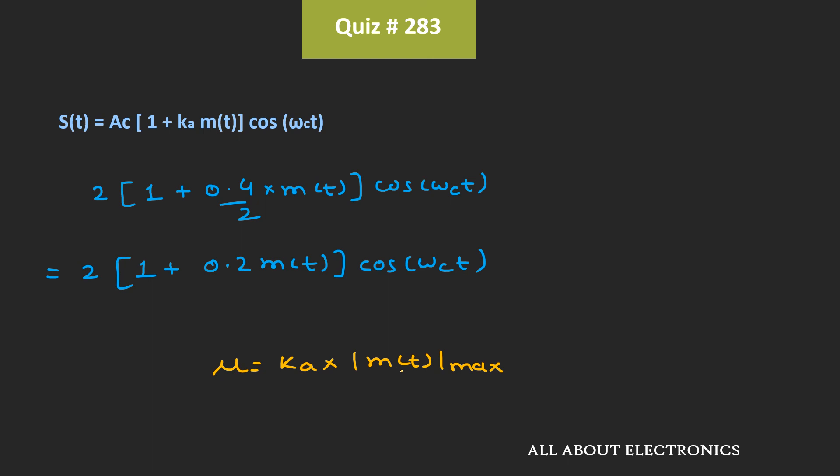So here, this amplitude sensitivity or Ka is equal to 0.2. And the maximum amplitude of the message signal is equal to 2V. That means here, for the given AM signal, the modulation index is equal to 0.4.